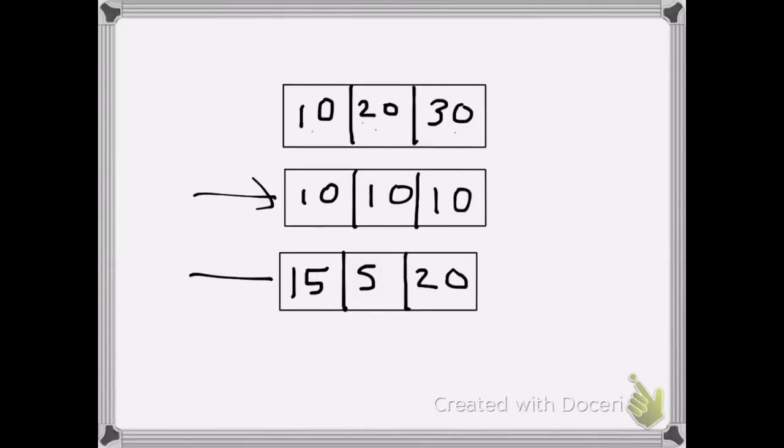As we got this middle array, we just need to compare it with the final array. 10 is not greater than 15, so count remains 0. 10 is greater than 5, so count becomes 1. 10 is not greater than 20, so count remains 1. For this case, the answer is 1.